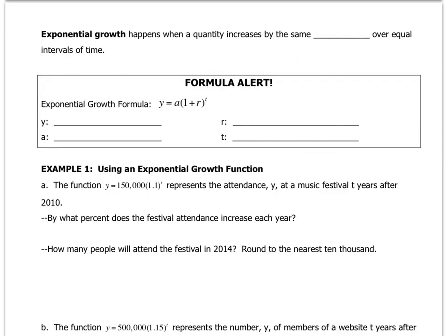Exponential growth happens when a quantity increases by the same factor over equal intervals. I've also used the word ratio in previous examples. And this formula right here, this exponential growth formula might look a little intimidating, but I want you to realize that it's really just another form of y equals a, b to the x. Only instead of b, we're putting 1 plus r.